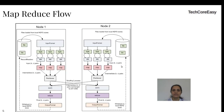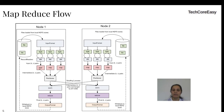Now let's start the MapReduce flow. The map phase always accepts input in key-value pair format. But our file is stored in a different file format — so who converts that into key-value pairs for the mapper? The Record Reader comes into the picture. The Record Reader reads a single record at a time, converts it into key-value pair format, and gives it as input to the mapper.